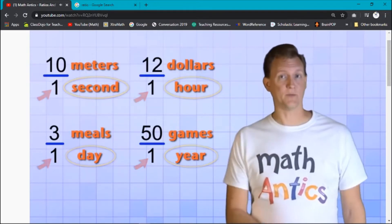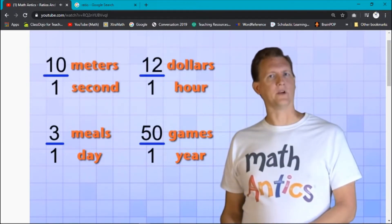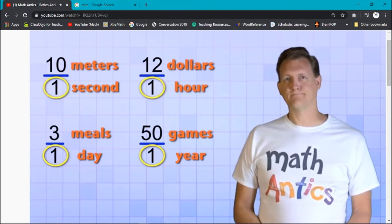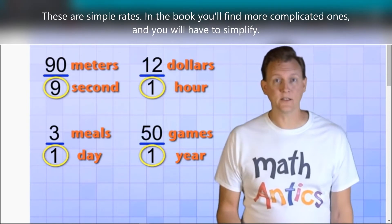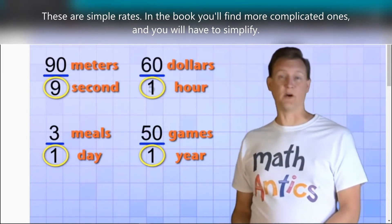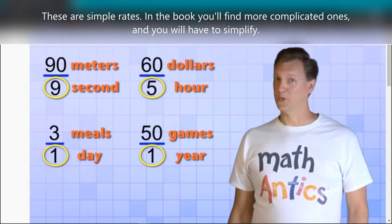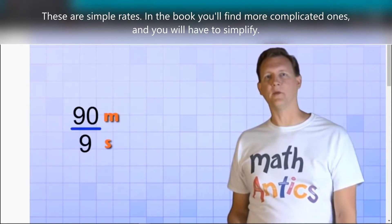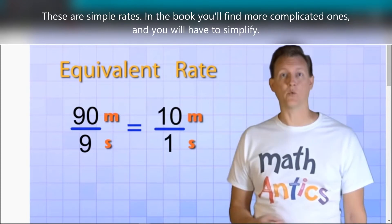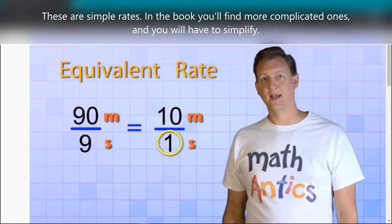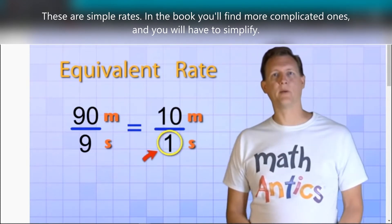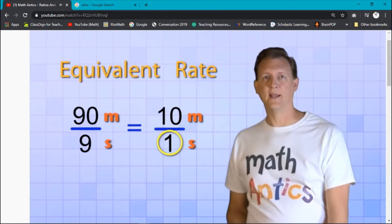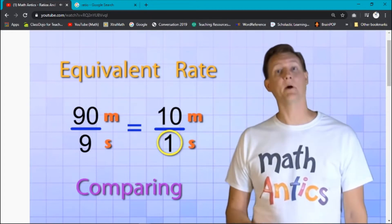So that's simple enough. But you might be wondering, why are the bottom numbers of all these rates one? Couldn't you have a rate like 90 meters per 9 seconds or 60 dollars per 5 hours? We sure could. But most of the time, when we have rates like that, we want to convert them into an equivalent rate that has 1 as the bottom number. That's because whenever the bottom number represents only 1 unit of time, like 1 hour or 1 day, it makes comparing different rates much easier.